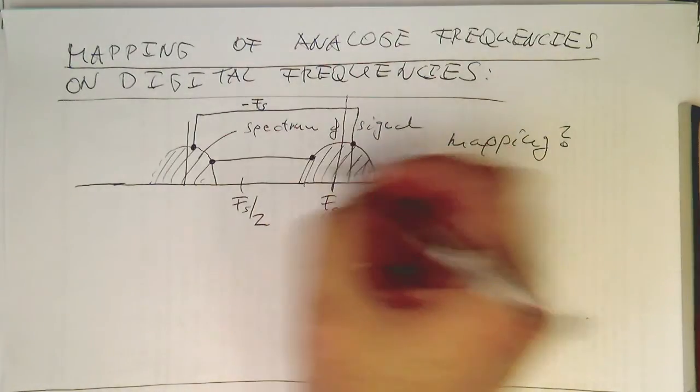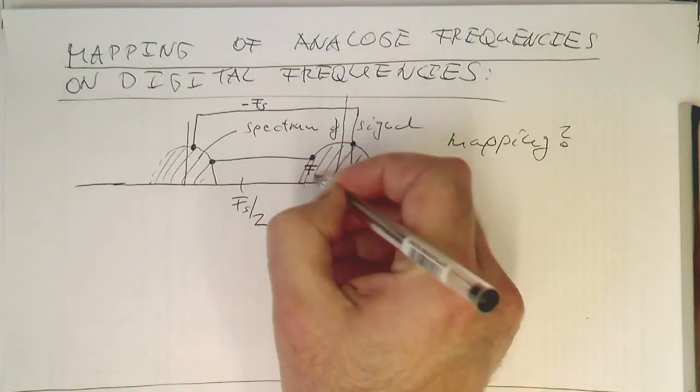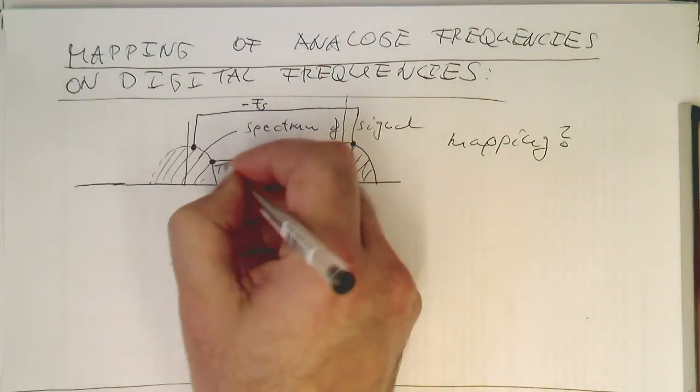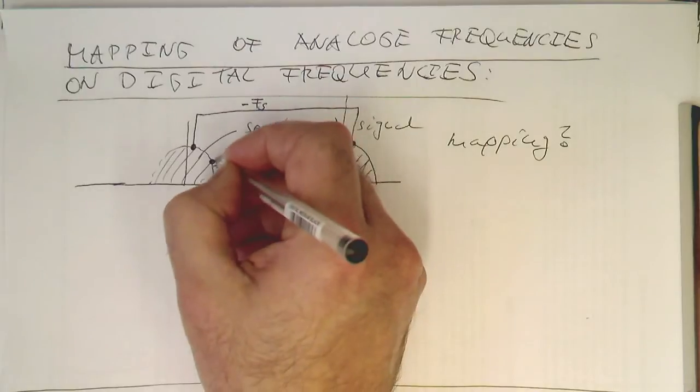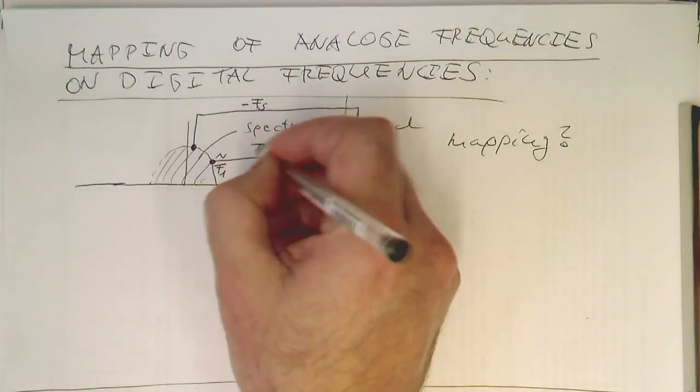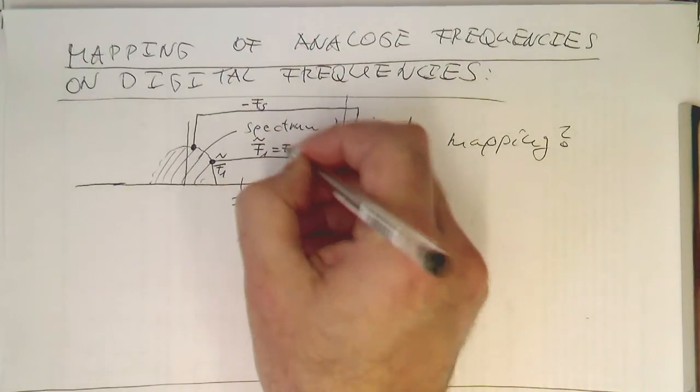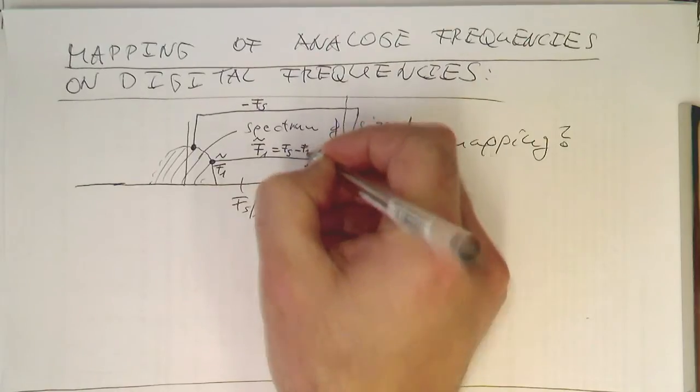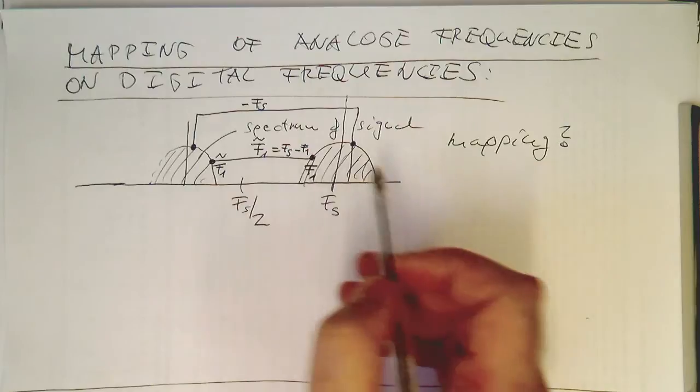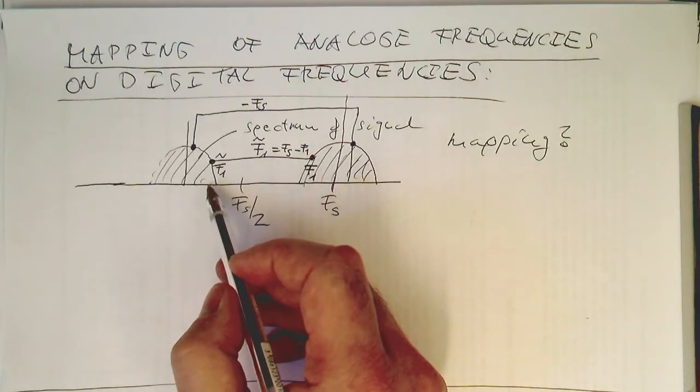So if we have a frequency here, let's call this F1 or something like this. And so this one is here, let's call this F1 tilde or twiddle. Then this would be generated, so this F1 tilde is Fs minus F1. So we are subtracting this here. We are taking the Fs here and creating the mirror just in the reverse order.